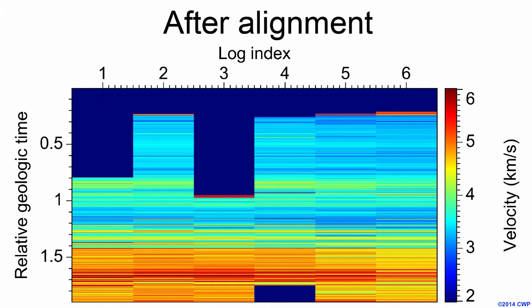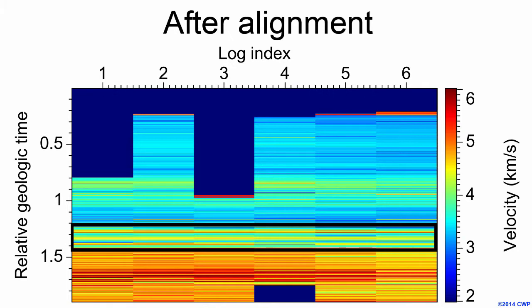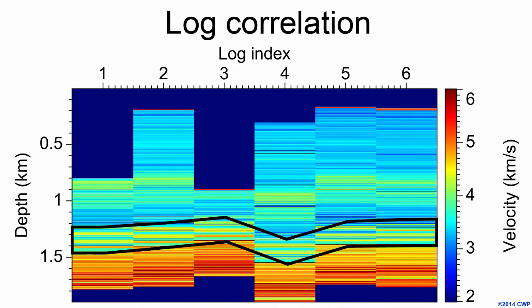For any constant relative geologic time, we have a set of six corresponding depths, one for each log. If you focus on the velocity layers within the black rectangle, we can find sets of corresponding depths for each constant relative geologic time within this, and then map from time back to depth to get our final correlation, which gives us an idea of the structure in the subsurface. Here again, you can see that well three passes through the top of the anticline.